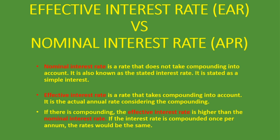If the interest rate is compounded once per year, the rates would be the same for both the effective interest rate and nominal interest rate. But if there is more than one compounding during the period, the effective interest rate is always higher than the nominal interest rate.